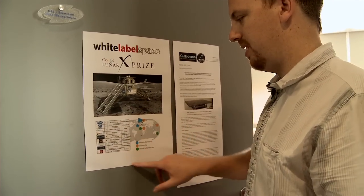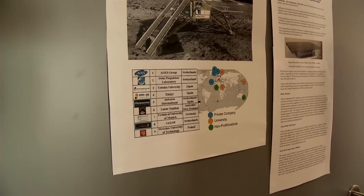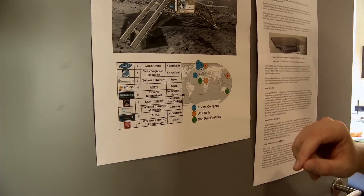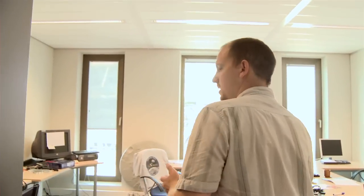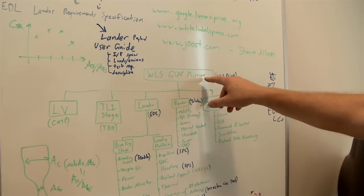And here's our little partner board. It shows currently there are nine partners listed there in different countries in the world. And the mission itself is huge. There's going to be hundreds and hundreds of people involved. That's the White Label Space Google Lunar XPRIZE mission.